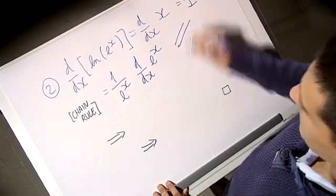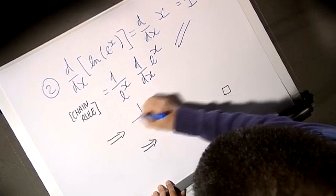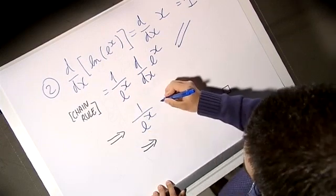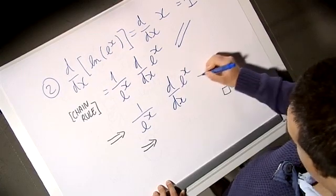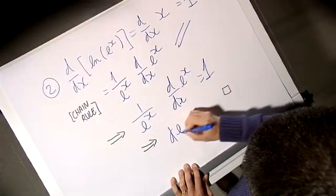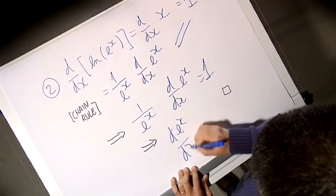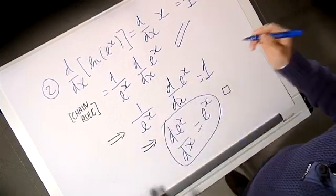But given that these two expressions must be the same, then you have from here that (1/e^x) times the derivative of e^x is equal to 1, which implies that the derivative of e^x is just e^x, which is what we wanted to prove in the first place.